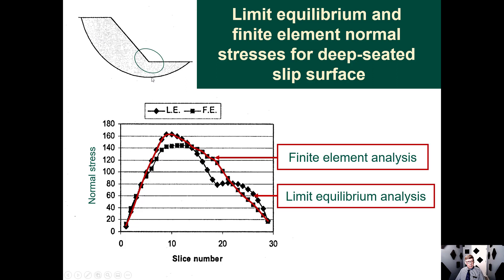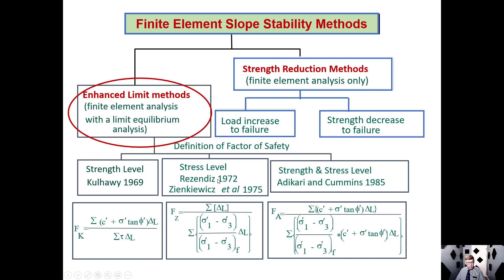In another example with a deeper slip surface going beyond the toe of the slope, the black symbols again define values from the limit equilibrium analysis, clearly showing a distinct break at the toe. But when you do the finite element analysis, the effect of the toe gets smeared and stresses are distributed throughout the continuum — the red dots from the finite element analysis are the more accurate representation of the normal stress.